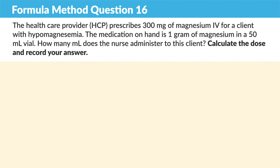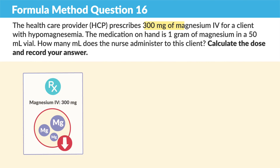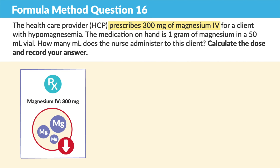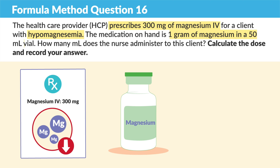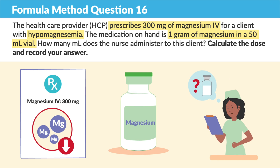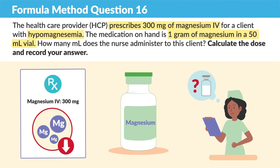Moving on to question 16. The healthcare provider prescribes 300 milligrams of magnesium IV to a client with hypomagnesemia — that's low magnesium. The medication on hand is 1 gram of magnesium in 50 mLs. So how many mLs does the nurse administer to the client?